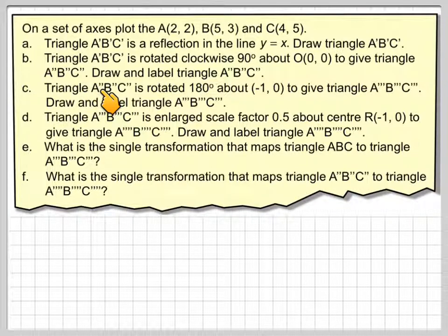Triangle A''B''C'' is rotated 180 degrees about the point (-1, 0) to give triangle A'''B'''C'''. Draw and label the triangle A'''B'''C'''. Triangle A'''B'''C''' is enlarged, scale factor 0.5, about centre R(-1, 0) to give triangle A''''B''''C''''. Draw and label that triangle. What is the single transformation that maps the original triangle ABC onto A'''B'''C''' and what's the single transformation that maps triangle A'B'C' to triangle A''''B''''C''''?